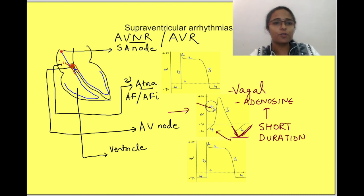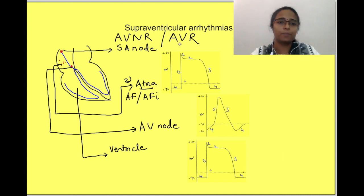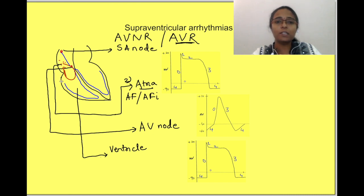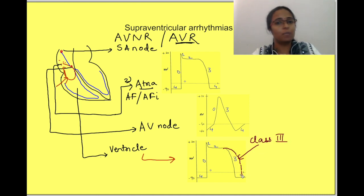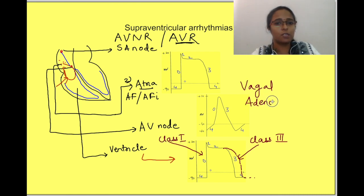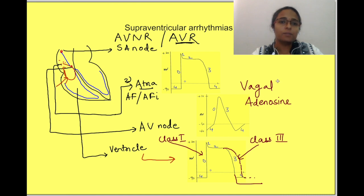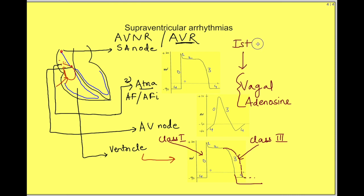Class 2 and class 4 drugs may also be used since the AV node is involved. For atrioventricular re-entry, where there is an accessory pathway between the atria and ventricles, we need to act on ventricular cells — keeping them refractory longer using class 3 drugs (potassium channel blockers) and increasing the threshold using class 1 drugs. Vagal maneuvers and adenosine, which hyperpolarize the tissue, are in fact the first-choice treatment for terminating these re-entry arrhythmias.